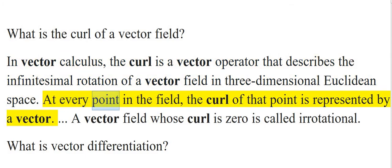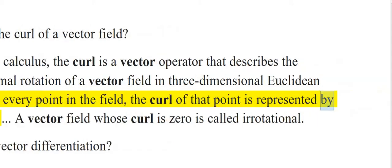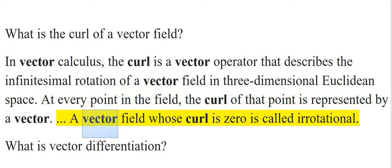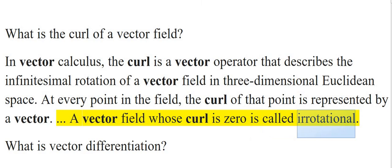At every point in the field, the curl of that point is represented by a vector. A vector field whose curl is zero is called irrotational.